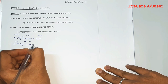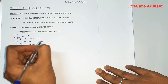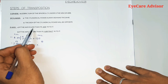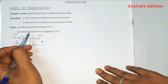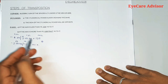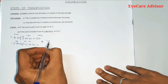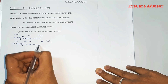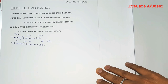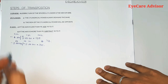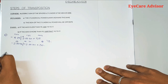Step three is the axis. If the axis is less than 90, add 90 to it; if it is more than 90, subtract 90. Since 120 is more than 90, we do 120 minus 90, which gives 30 degrees. So the transposition for Example 1 gives us: minus 2 spherical, minus 2 cylindrical, axis 30 degrees.